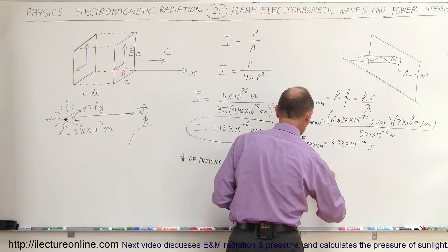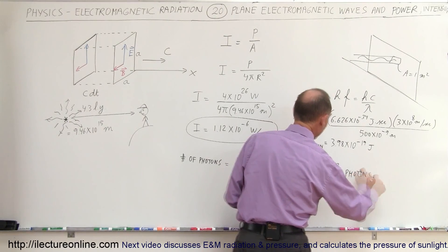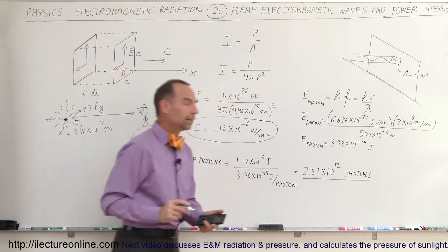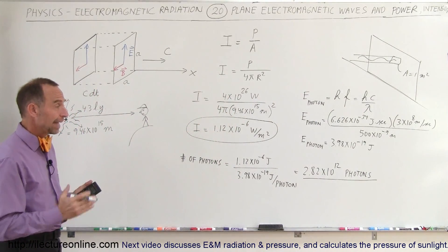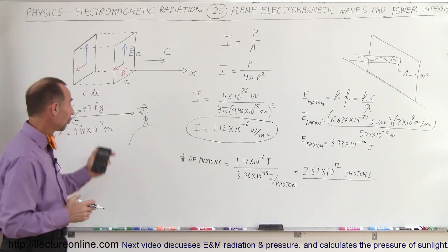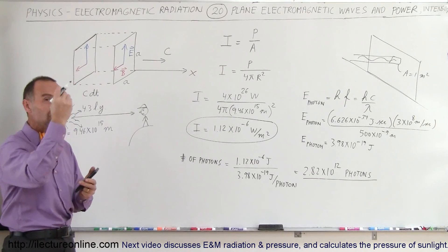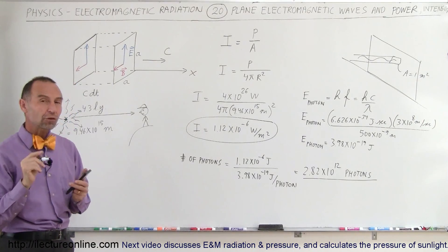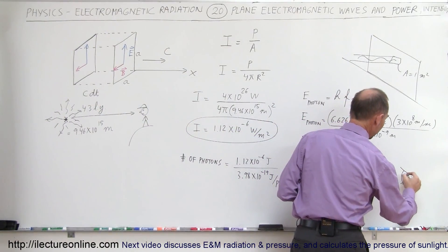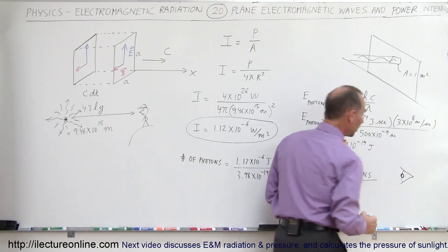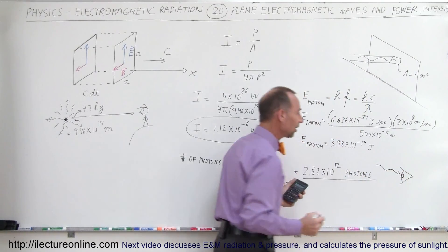That's 2.82 times 10 to the 12th photons arriving on every square meter surface of the Earth every second from Alpha Centauri — a star 4.3 light-years away. Now, when we look at the star, how many of those photons enter our eye every second? Notice the eyeball is much smaller than a square meter, so we need to think about the pupil — the opening through which we receive the starlight.